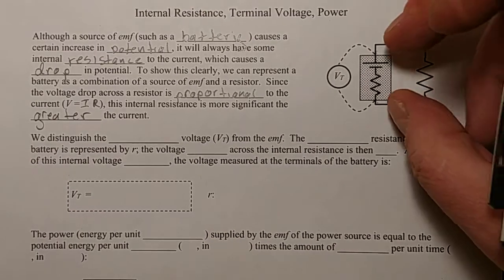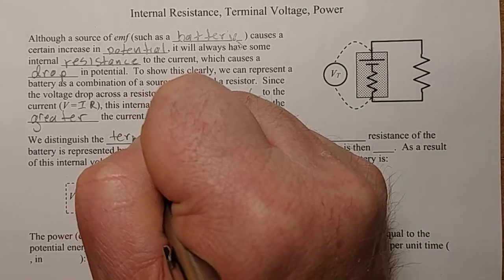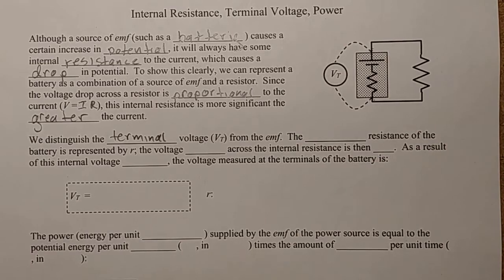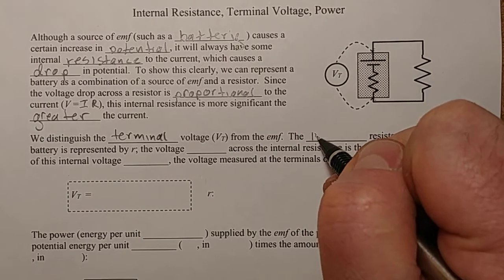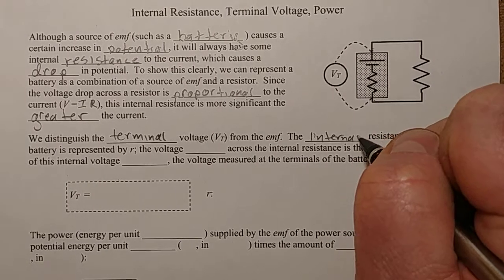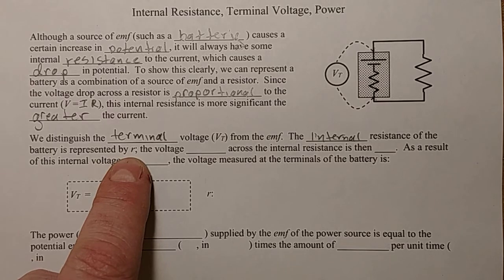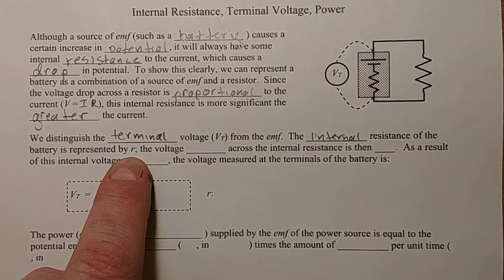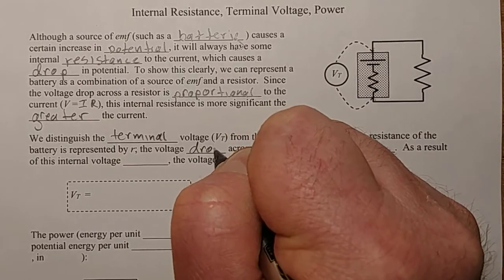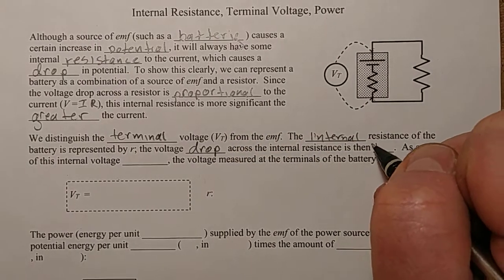So what we do is we talk about the voltage on the outside of the battery, the voltage that you measure as the terminal voltage, the voltage you can see on the outside of the battery, the internal resistance of the battery is represented by this little r. We use a capital R normally for resistor, but in this case, we use this little r.